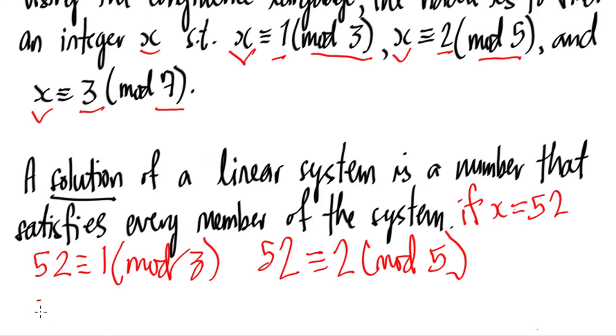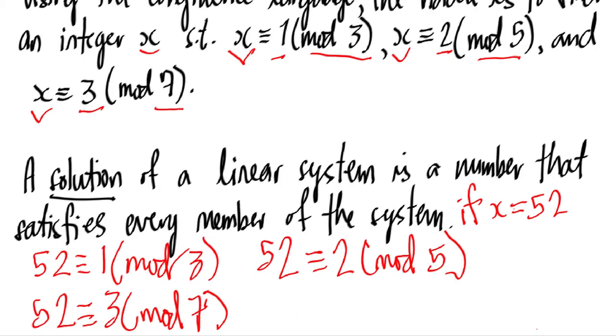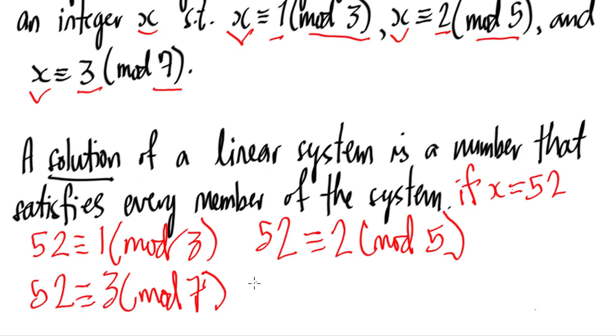For the last one we have 52 is congruent to 3 mod 7. What is the table of 7? We have 7, 14, 21, 28, 35, 42. After 42 we'll have 49, so 52 divided by 7 is 49 remainder 3. Therefore, we can see that 52 is a solution of the above Chinese riddle.